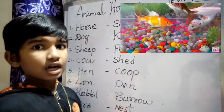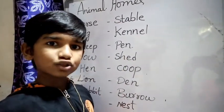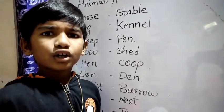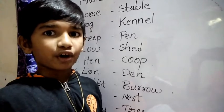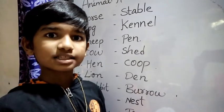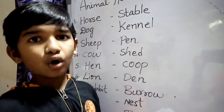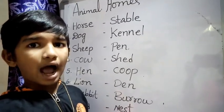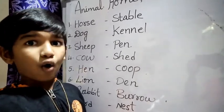Now let's learn animal houses. I will ask one question: why do we need homes? We need homes to live in — it protects us from wind, sun, rain, wild animals and thieves. Animals also need homes for all these purposes. Now I will show some animals and their home pictures — you tell me their names.